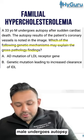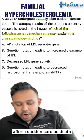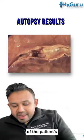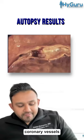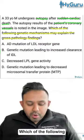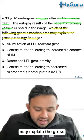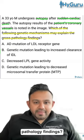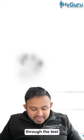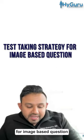A 33-year-old male undergoes autopsy after sudden cardiac death. The autopsy results of the patient's coronary vessels are noted in the image. Which of the following genetic mechanisms may explain the gross pathology findings? I wanted to go through the test-taking strategy for image-based questions.